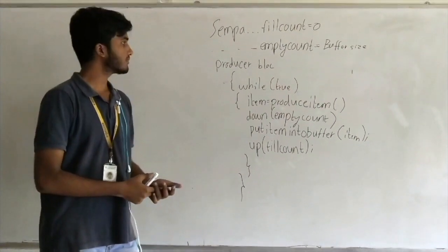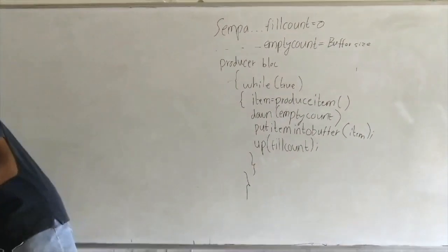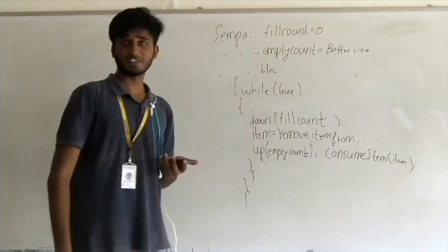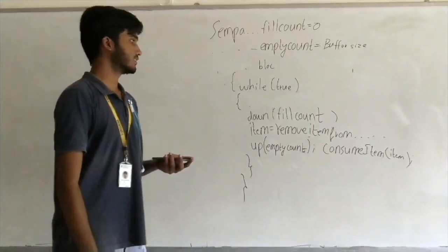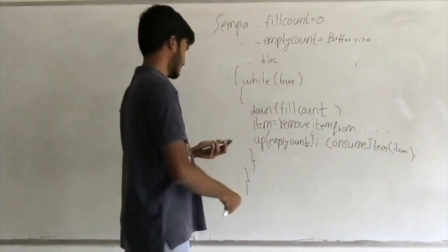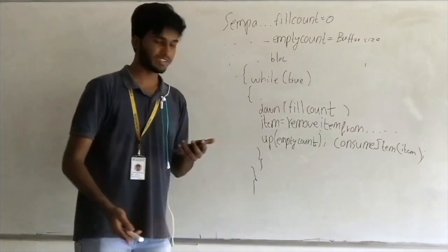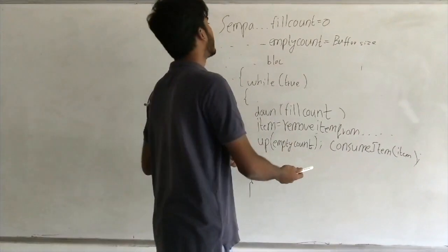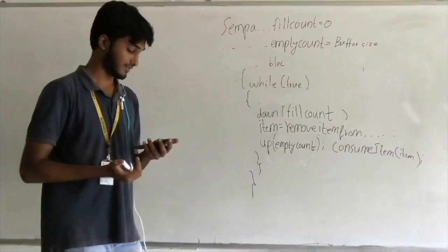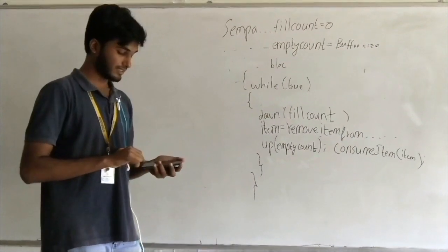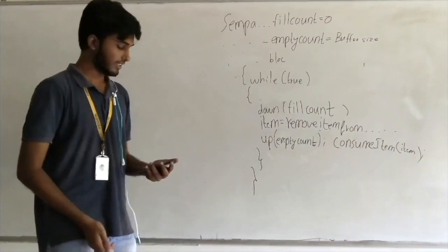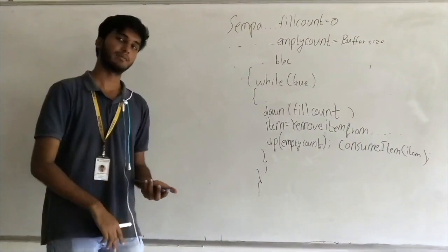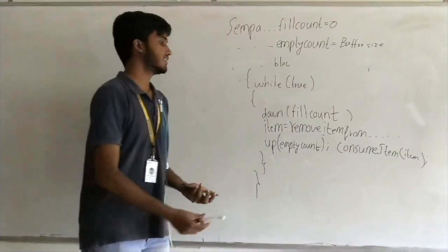Now for the consumer block. Again we have the while-true statement, running infinitely. Then we have down fill count — the fill count is the number of readable items in the buffer. When the consumer consumes an item, that decrements the number of readable items by one.